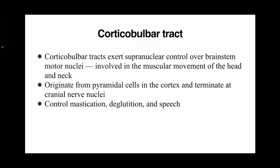The corticobulbar tract controls mastication, which is a function of the trigeminal nerve. When pathology is in the cortex, it affects the entire motor function of the head and neck — that is pseudobulbar palsy. It looks like a bulbar palsy, but the pathology is not in the medulla; it is in the cortex. So it is a UMN type of pathology resulting in features simulating bulbar palsy, which is why it is called pseudobulbar palsy.